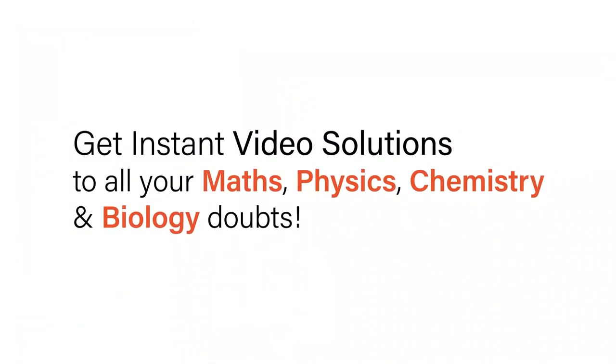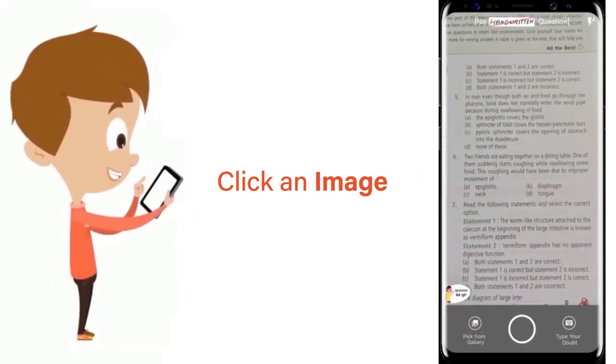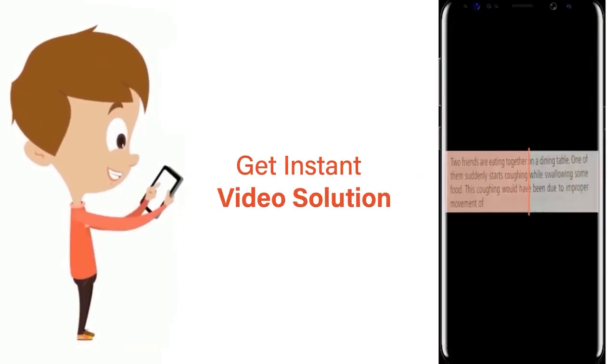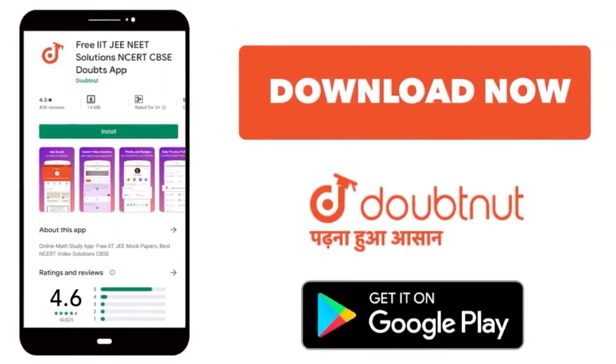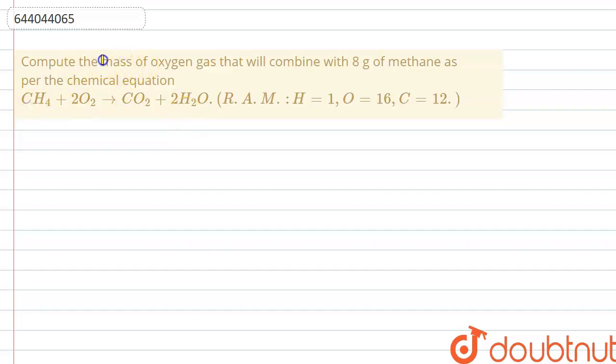With Doubtnet, get instant video solutions to all your math, physics, chemistry, and biology doubts. Just click the image of the question, crop the question, and get instant video solution. Download Doubtnet app today. Hello everyone, the question is: compute the mass of oxygen gas that will be combined with 8 grams of methane as per the chemical equation.